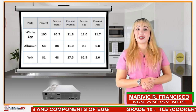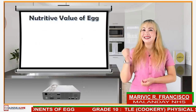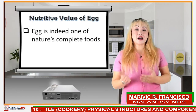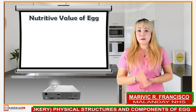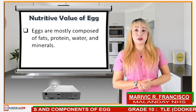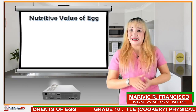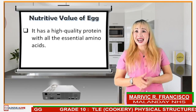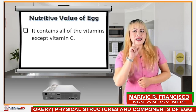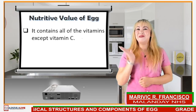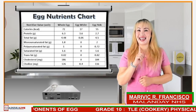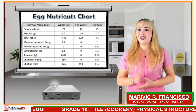Let us now learn the nutritive value of an egg. Egg is indeed one of nature's complete foods. Eggs are a very versatile food that can be prepared as a standalone food or combined with other ingredients. Eggs are mostly composed of fats, protein, water, and minerals. It has high-quality protein with all the essential amino acids. It contains all of the vitamins except vitamin C. Let us take a look at the egg nutrient chart.